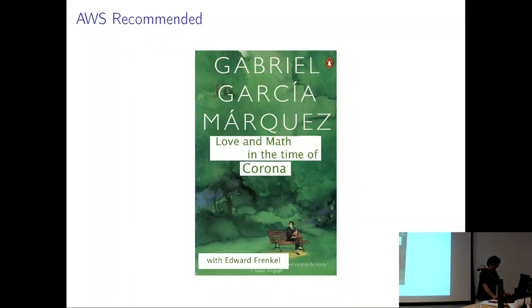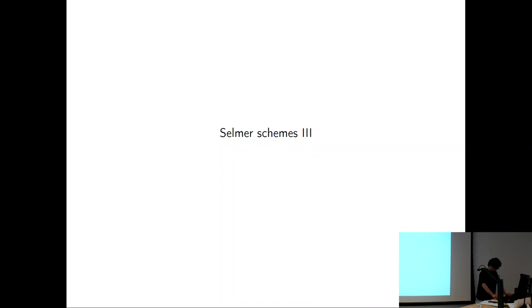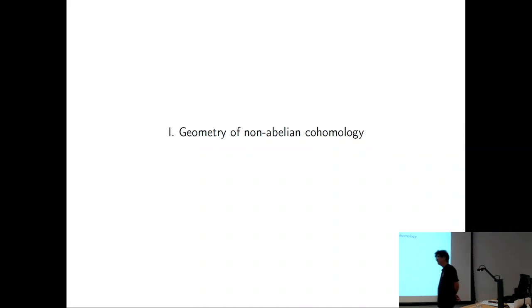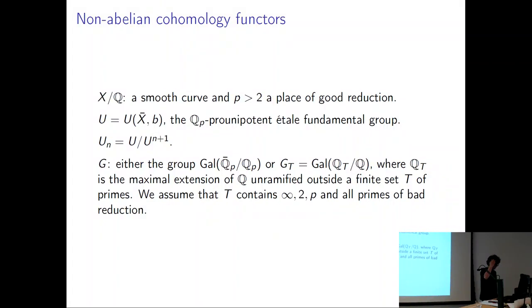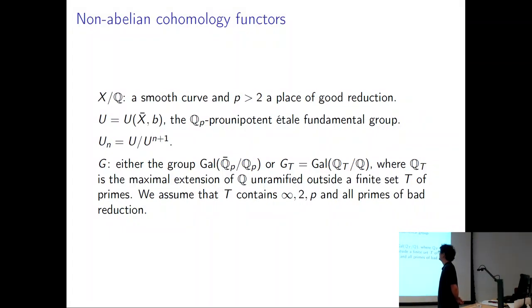We'll move on to maybe the only part of this story that I've actually contributed something. This is about the whole business we've already alluded to many times — trying to view non-abelian homology in a geometric way. X is just a smooth curve, and if you are worried about various issues of weightings of homology and so on, you can assume it's a compact curve as well. That's what we're mostly interested in.